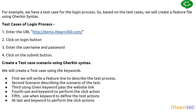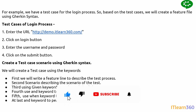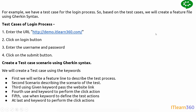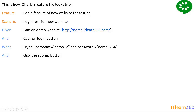The first step is to enter the URL, so we use the Given keyword. Before that, we define the Feature line and write a Scenario keyword line describing the test. Then using Given, we pass the website link. The second step is clicking the login button — this is an action, so we use the And keyword and write the login statement. For entering the username and password, we can use the Then or When keyword.